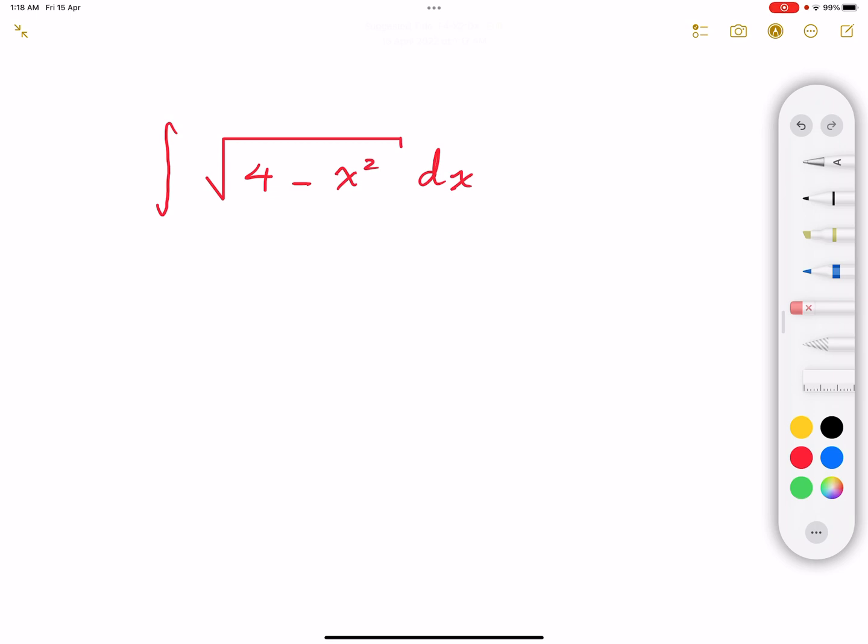We're going to use trigonometric substitution, that would be the easiest way to solve for this integral. We're going to benefit from the idea that 1 minus sine squared is going to be equal to cosine squared.